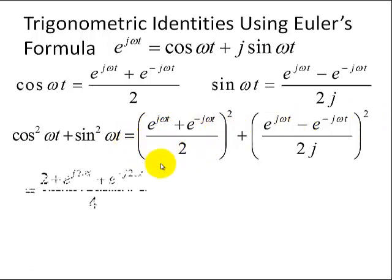Then, we're going to multiply this out algebraically, and so, when you square e to the j omega t, we get e to the j 2 omega t. Similarly, when we square e to the minus j omega t, we get e to the minus j 2 omega t.